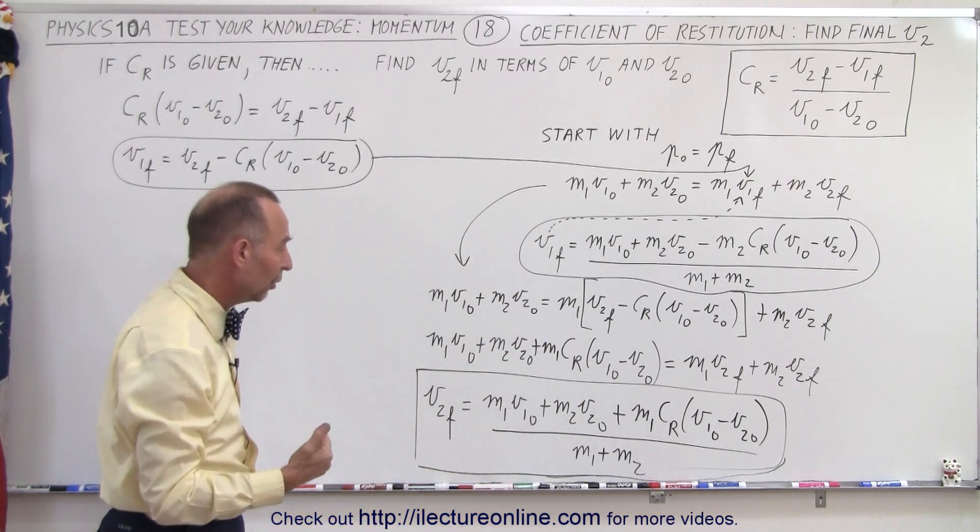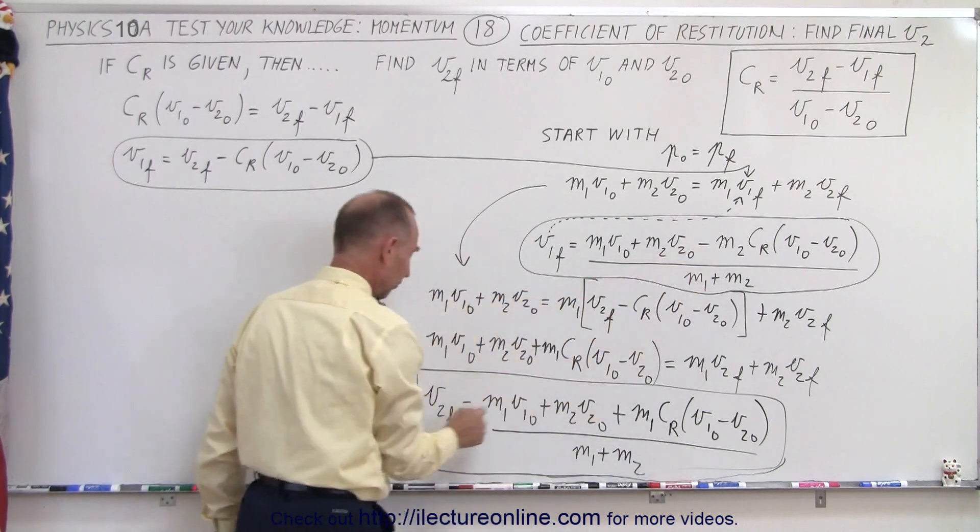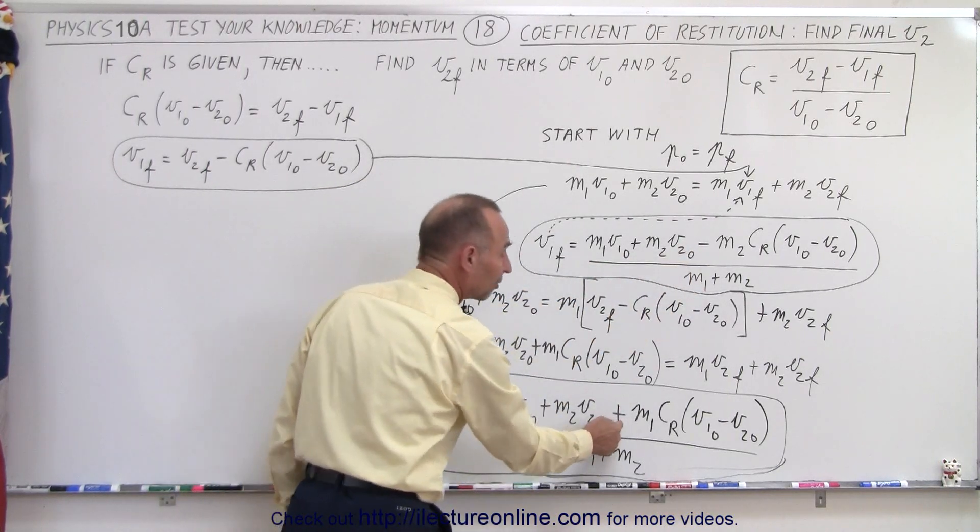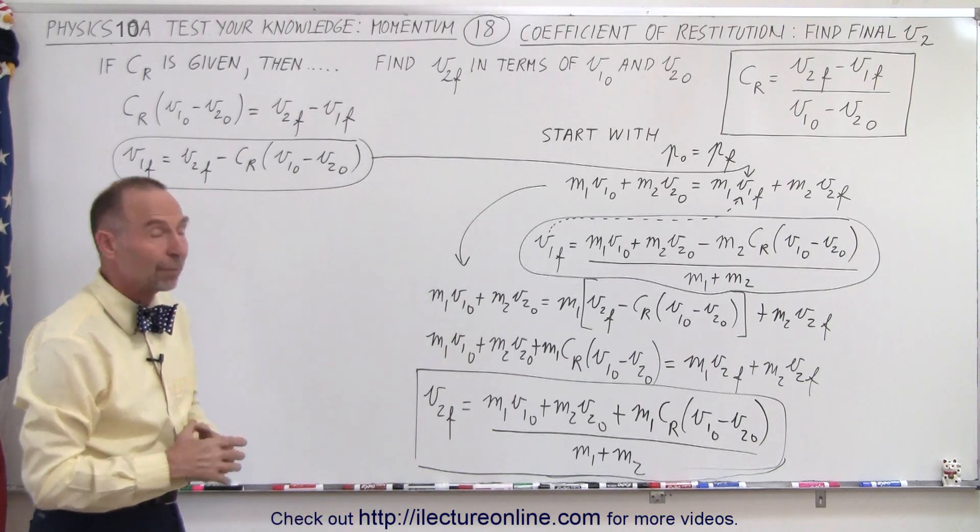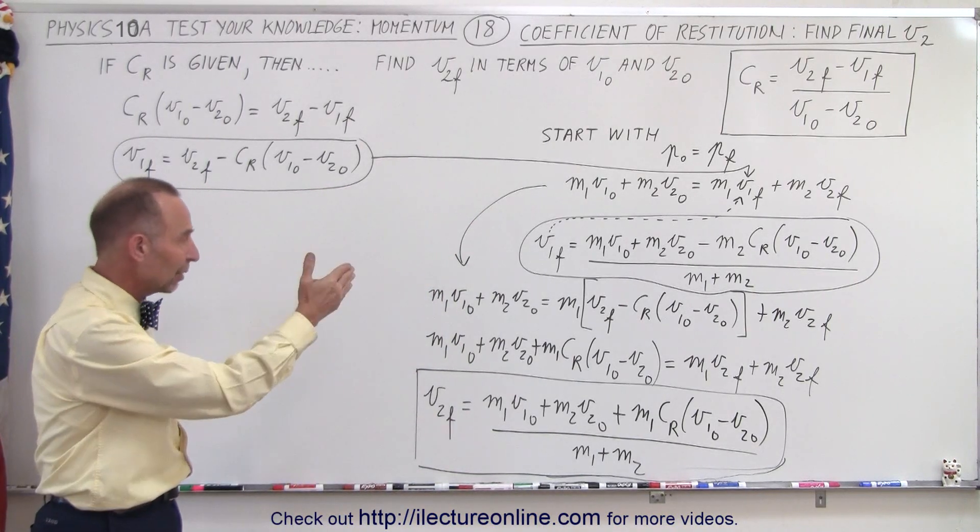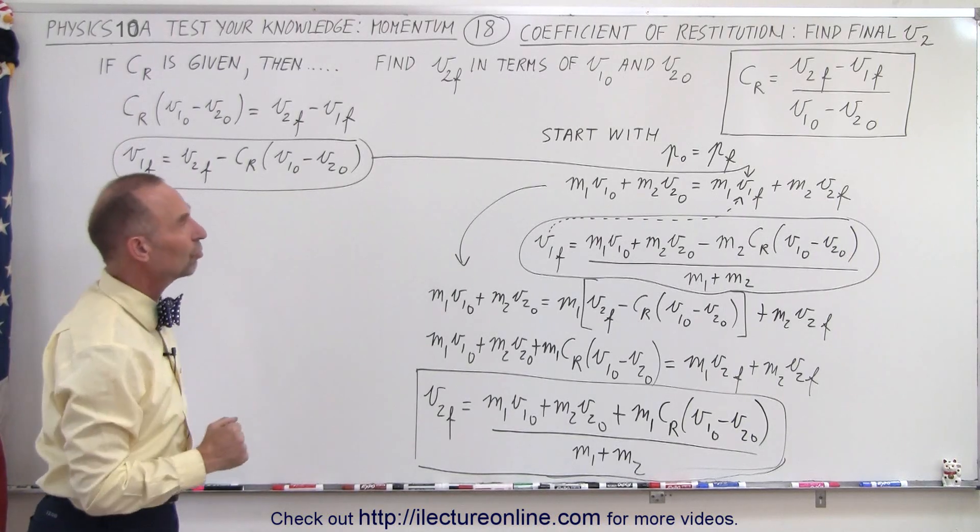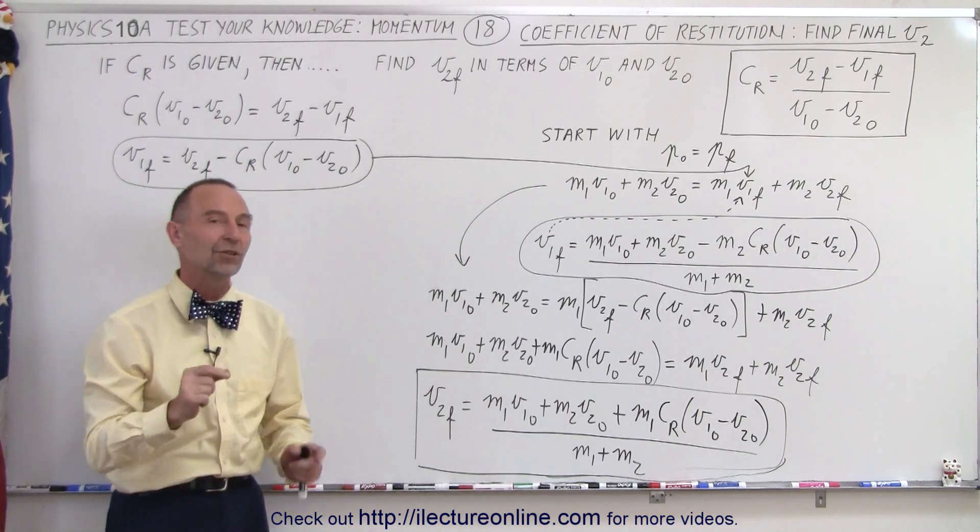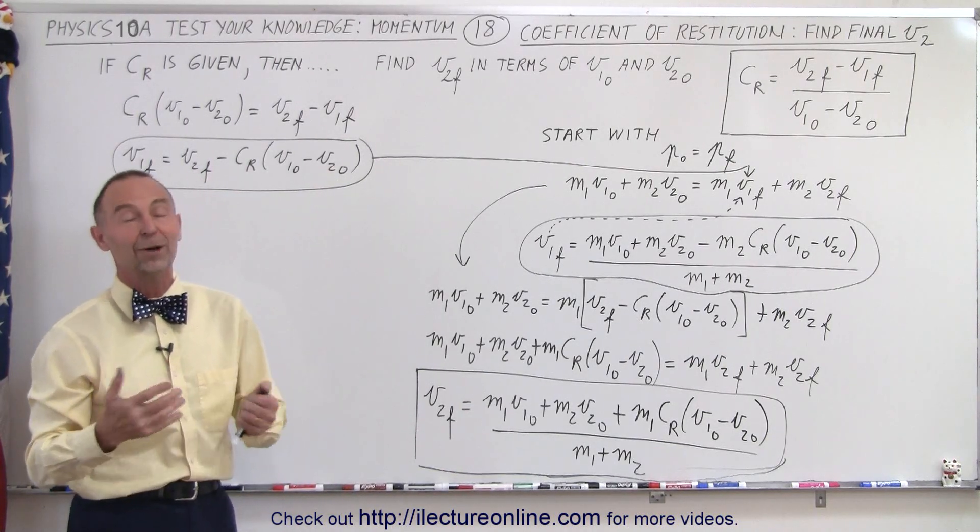So it does matter which one you solve for. For V1 final, you end up with a negative there. For V2 final, you end up with a positive there. For the numbers and the quantities to come out correct. But that at least is how you find V1 final and V2 final when the coefficient of restitution is known, all in terms of the initial velocities and the masses of the two objects. And that is how it's done.